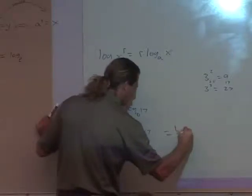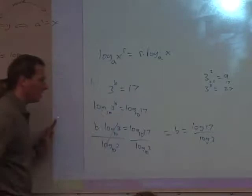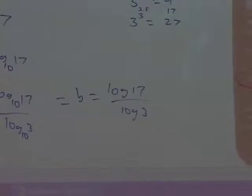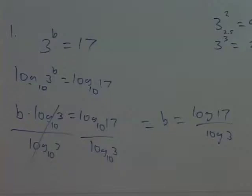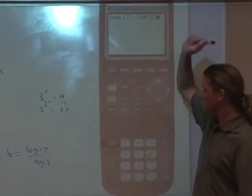B is equal to log of 17 over log of 3. What I did was I chose the log button here. I finished the parentheses after writing 17, and I put a divide, log base, excuse me, log base 10 of 3, and then of course, enter.